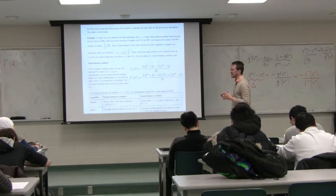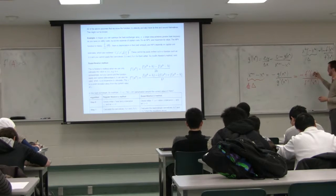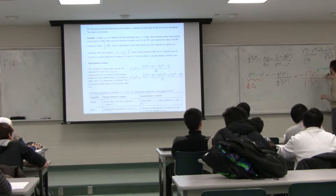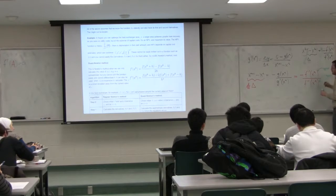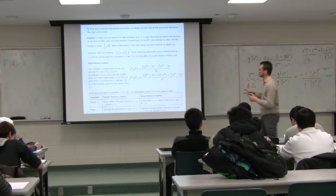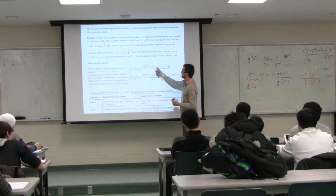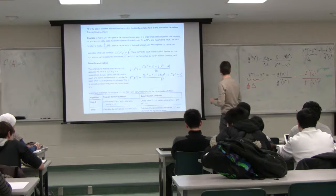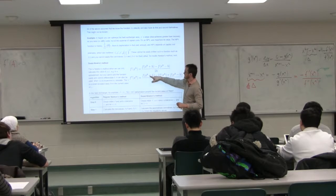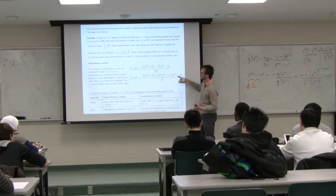We're going to use our central difference approximations for f prime of x and approximate the denominator. We only have to evaluate f at the base case plus a small perturbation and f at the current value minus a small perturbation. The central difference formula for the second derivative requires that same value of f, so we don't need to repeat the simulation in Aspen. We only need to calculate f at three points.